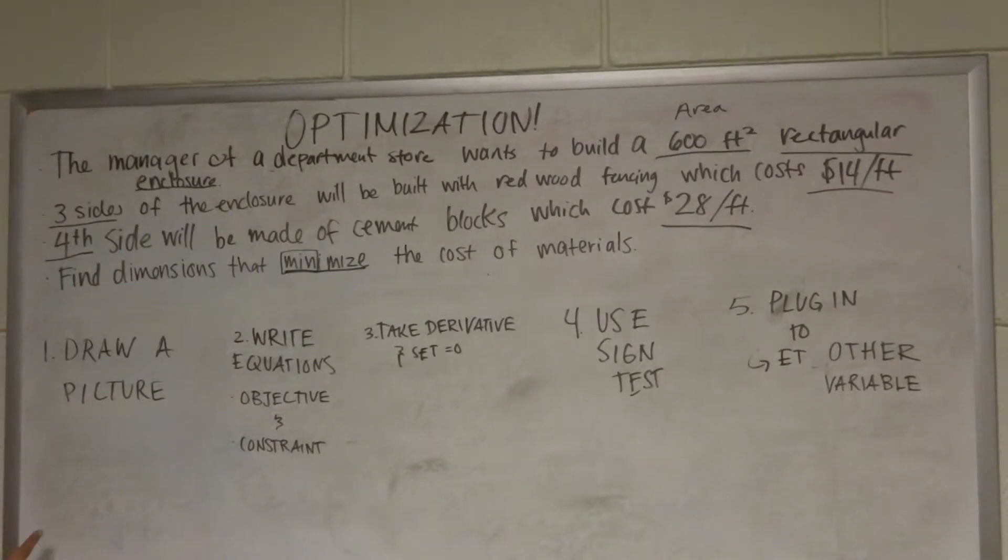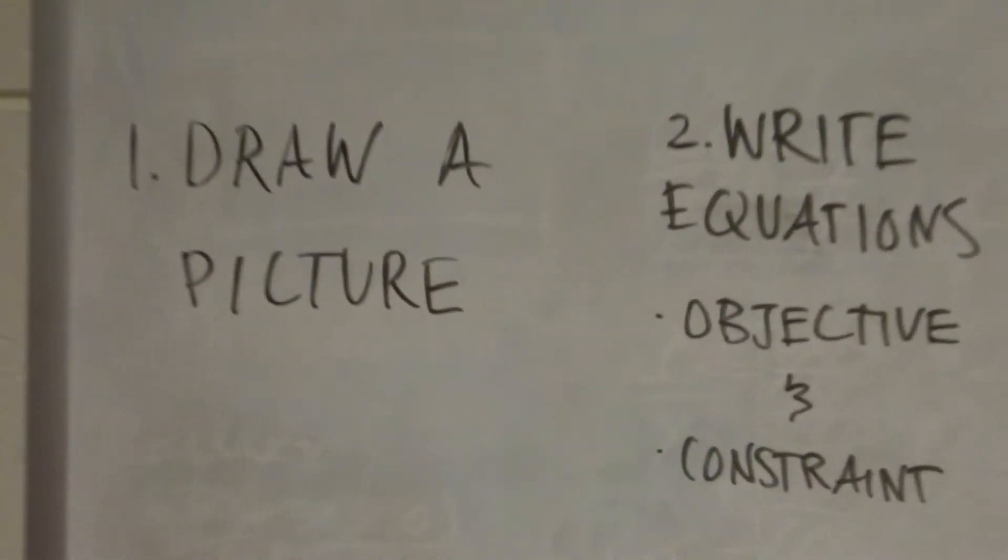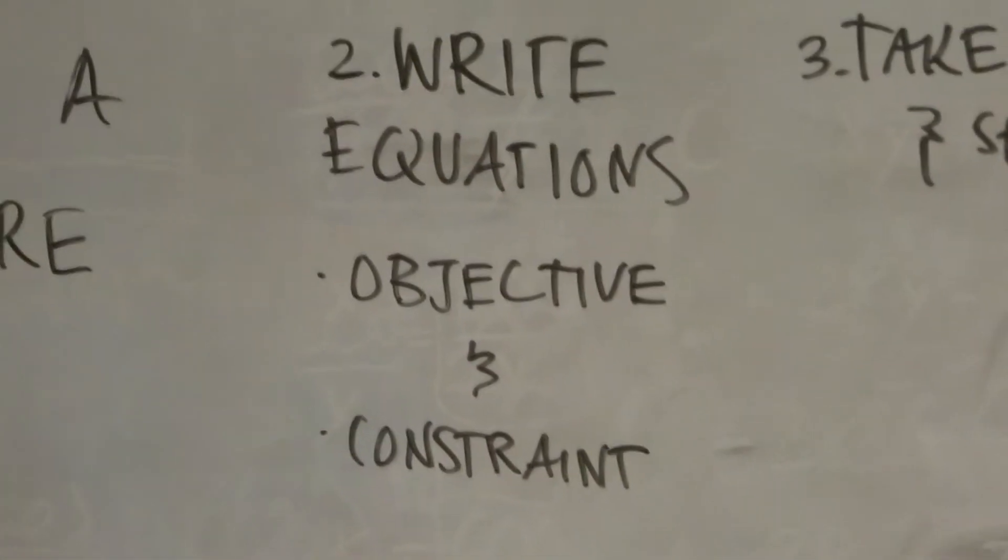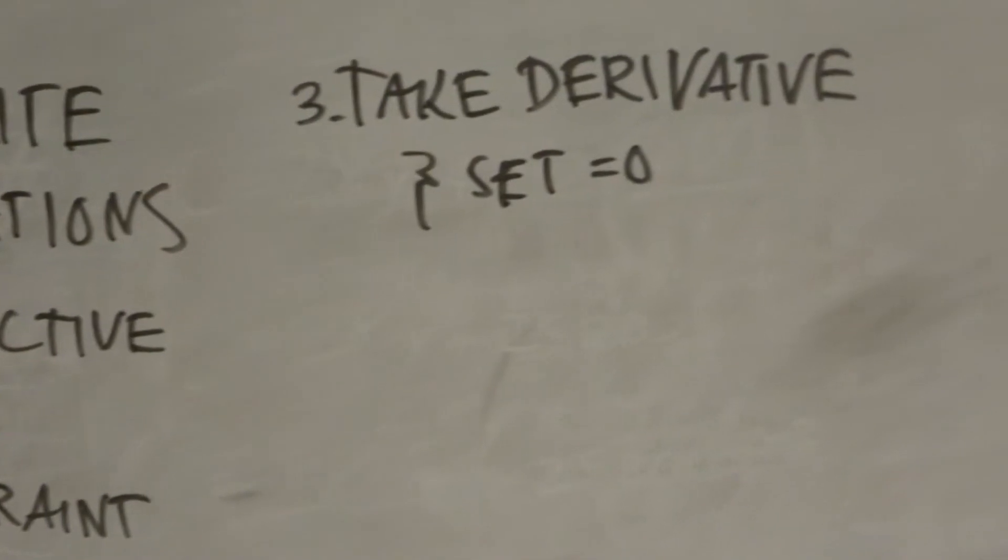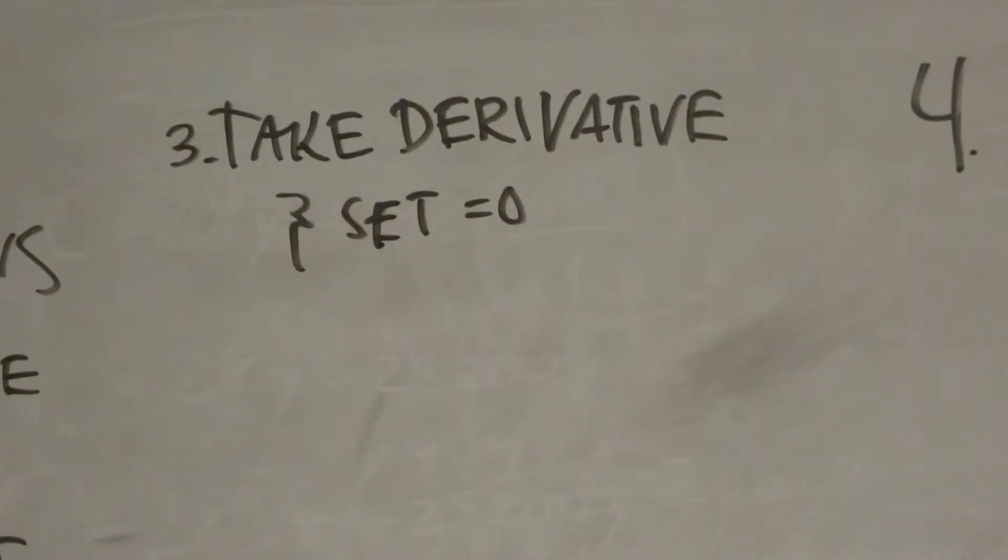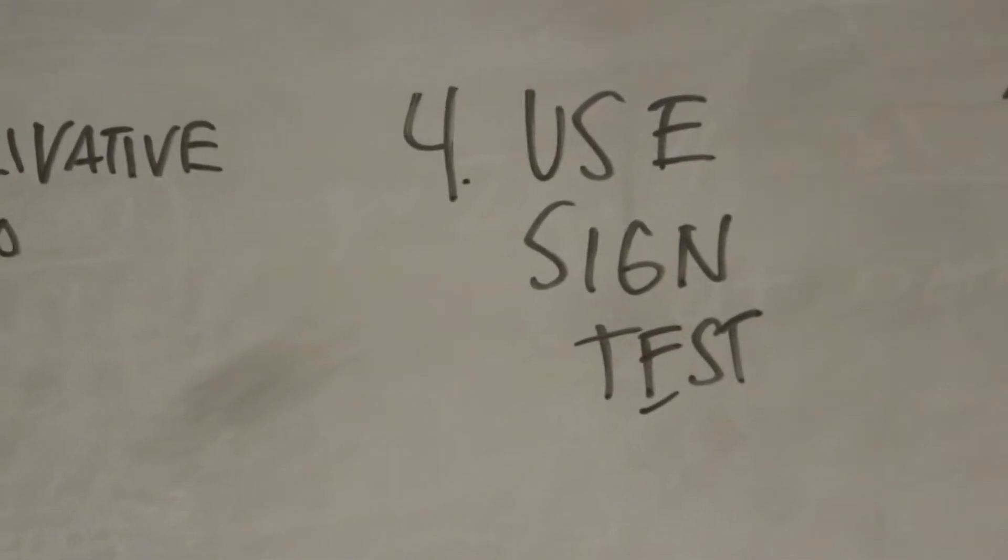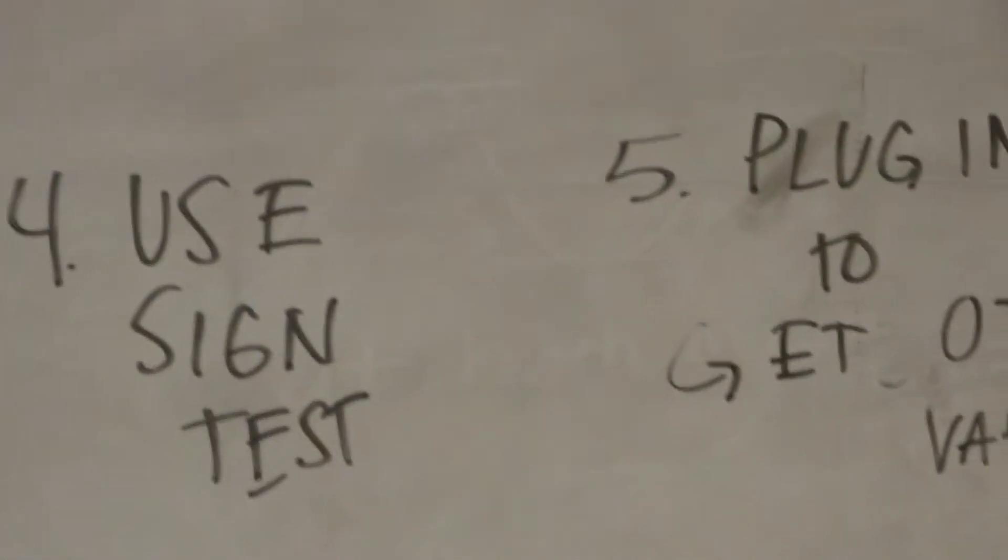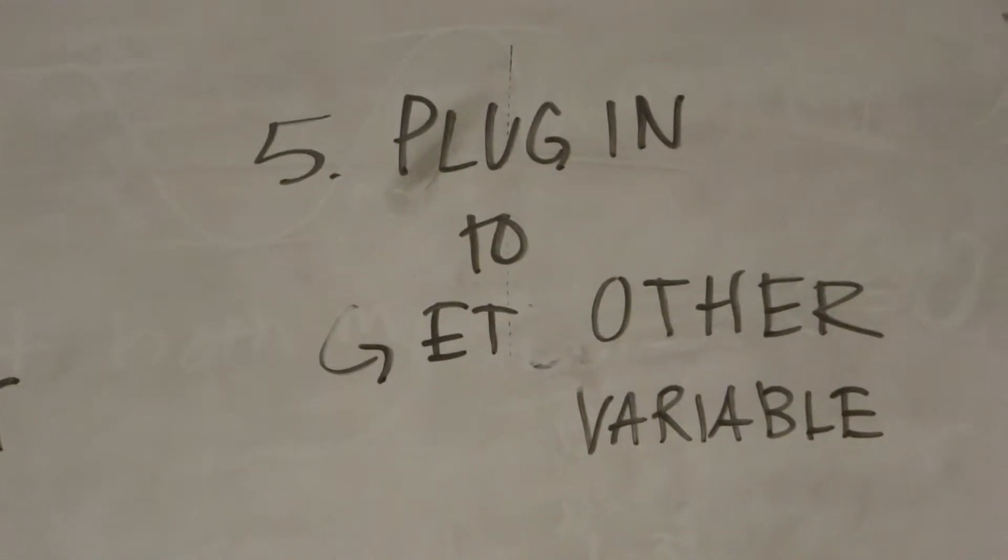Number one, draw a picture of whatever you're trying to minimize. Two, write equations - you're going to write an objective and a constraint equation. Three, take the derivative and set it equal to zero because that's where the function will be at a maximum or a minimum. Four, use a sign test to make sure it's a maximum or a minimum, whichever one that you want. And five, plug in the number that you get to get the other variable.